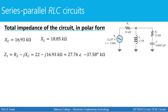We start by combining R2 and C2 in series. For a resistor and capacitor in series, we do R minus jXC. Plugging in values for R2 and XC, we convert that to polar form.